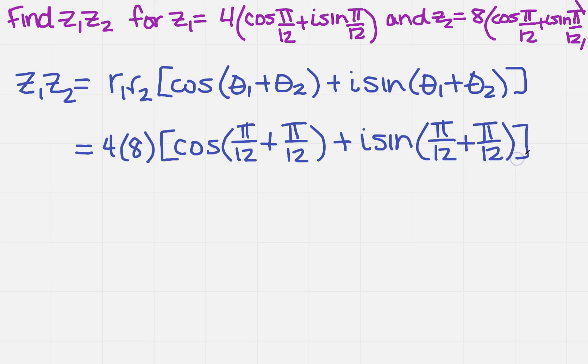I want to simplify this, and I'm going to get 32 times cosine of pi over 6, plus i sine of pi over 6.